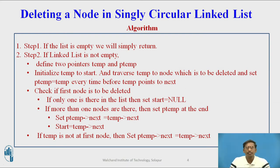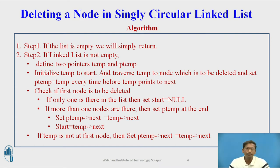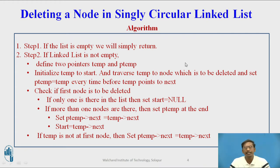Now we will see the algorithm for deletion of a node from a singly circular linked list, then we will see a program. Step one: the first task is to check whether the singly circular linked list is empty or not. If it is empty, you cannot delete a node from it and you simply return from that function.